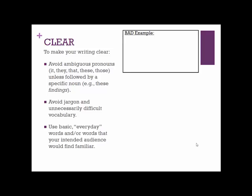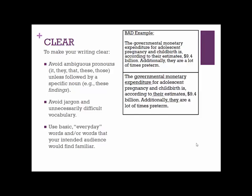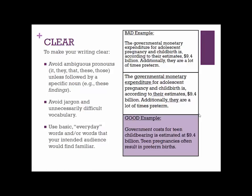An unclear sentence, a bad example, would be: 'The governmental monetary expenditure for adolescent pregnancy and childbirth is, according to their estimates, 9.4 billion. Additionally, they are a lot of times preterm.' Here we have jargony, unnecessarily complex phrases and ambiguous pronouns — 'there' and 'they' — we're unsure who these refer to. A much clearer version would simply say: 'Government costs for teen childbearing is estimated at 9.4 billion. Teen pregnancies often result in preterm births.' The pronoun 'they' is replaced with the exact noun phrase it means, and we say 'government costs' instead of 'governmental monetary expenditure.'